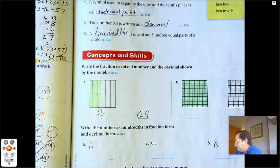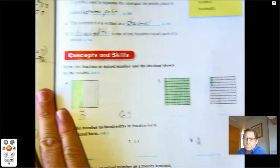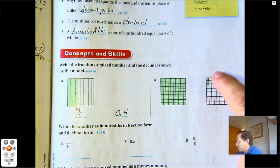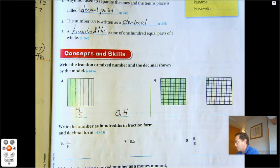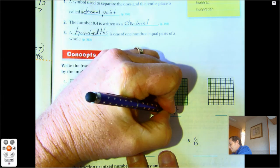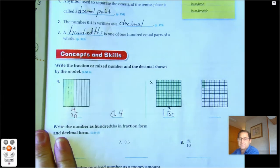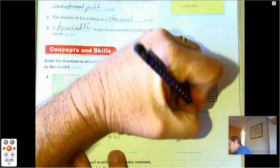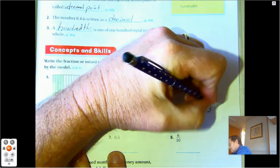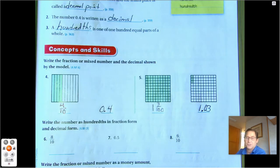So number five, the whole, all one hundred parts is shaded in one of them and then three parts of the next hundred. So we have one and three hundredths. Write that as a decimal: one and three hundredths.